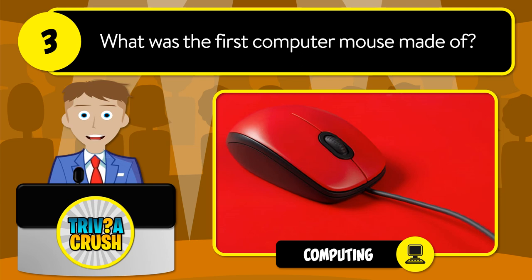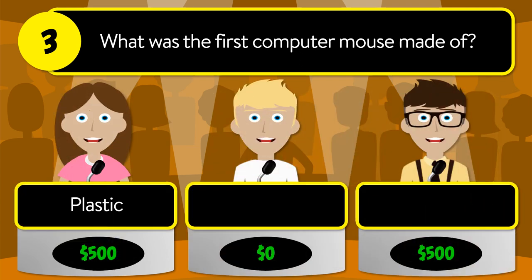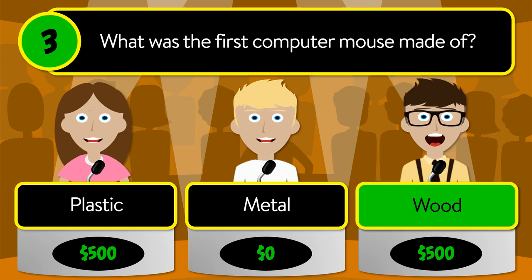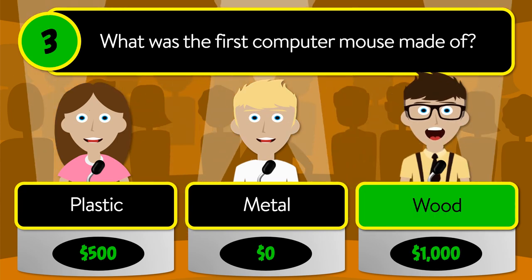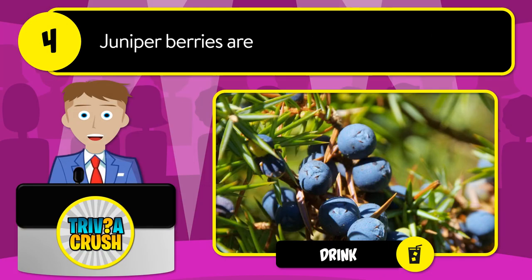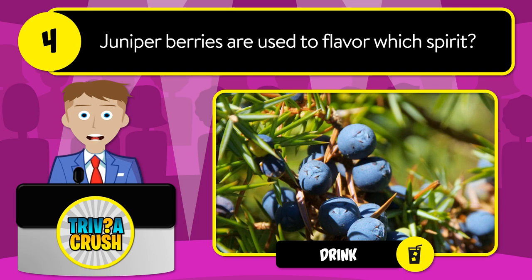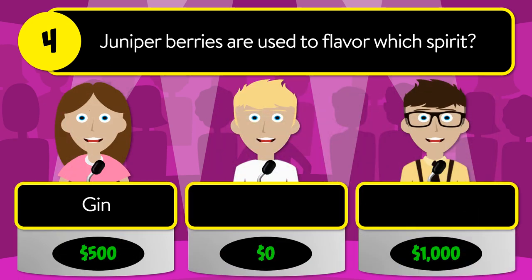Question number three: what was the first computer mouse made of? Was it plastic, metal, or wood? The correct answer is wood.